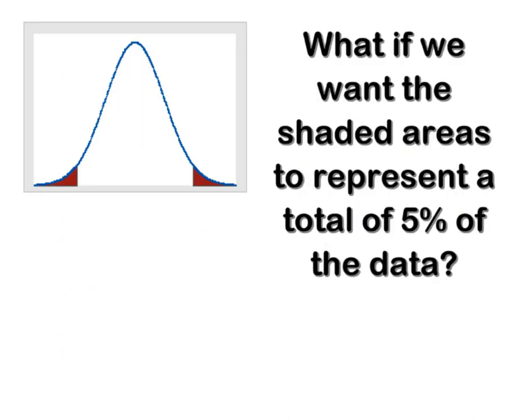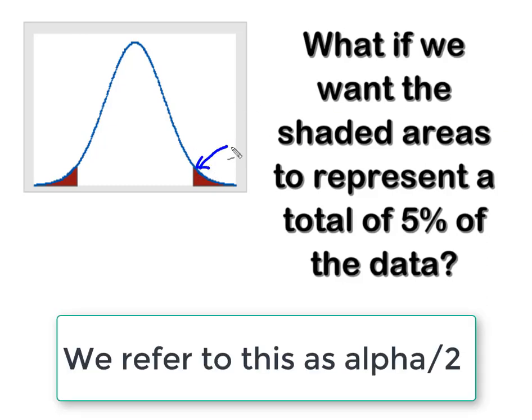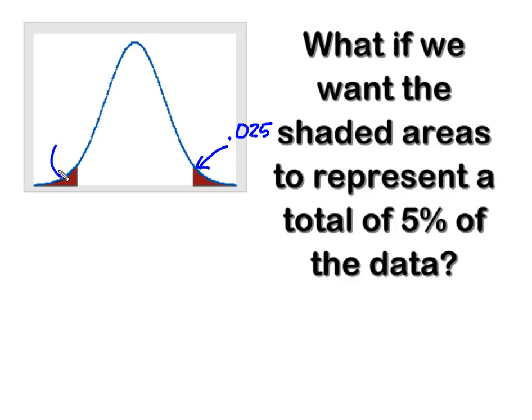Well, what if I wanted the shaded areas in this curve to represent a total of five percent? Well, because our curve is symmetrical, we know that five percent is split in two. And so now I know that I've got two and a half percent in my upper tail and I've got two and a half percent in my lower tail. And that's going to strand the other 95% in the middle.